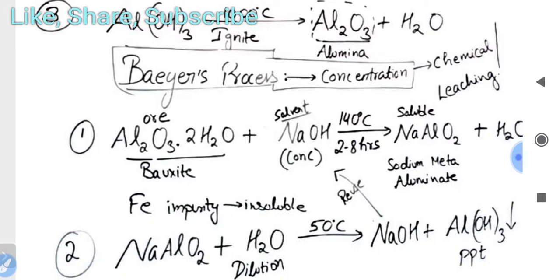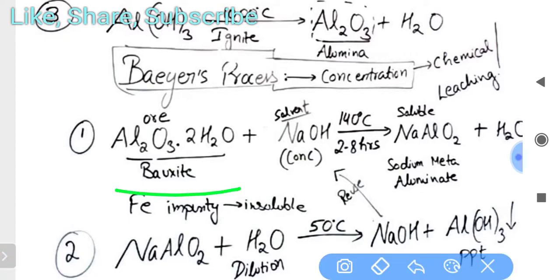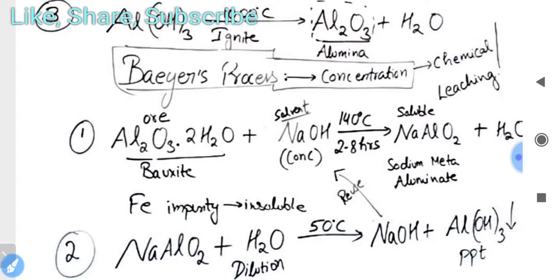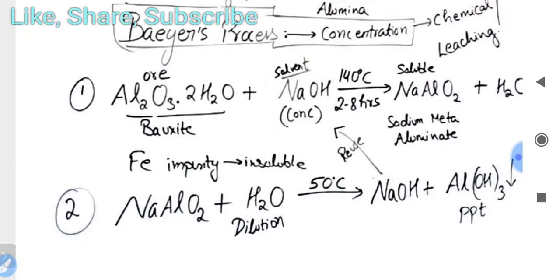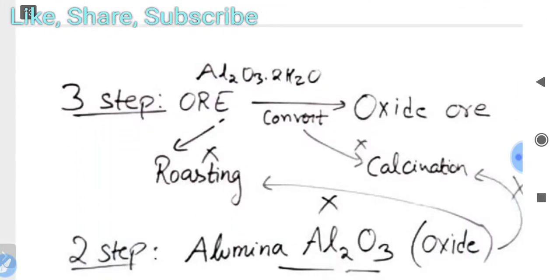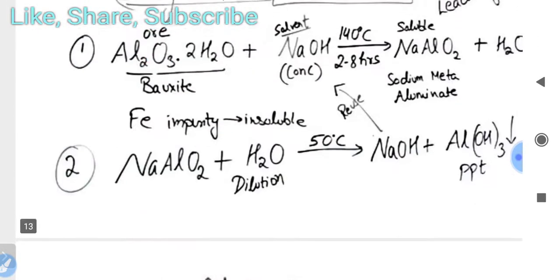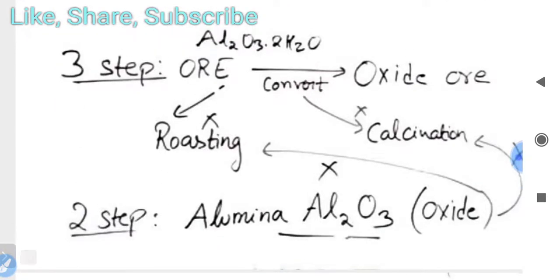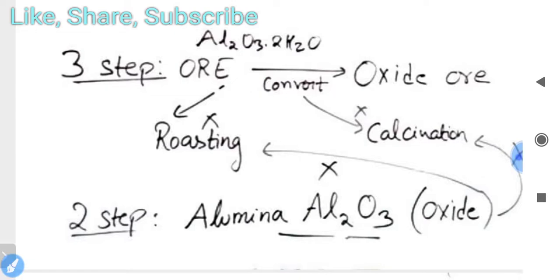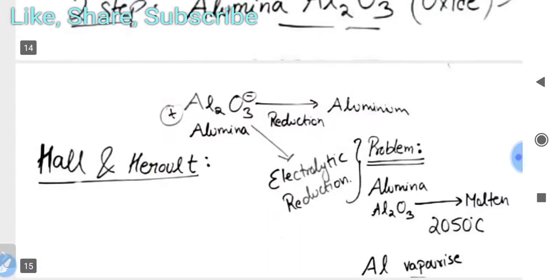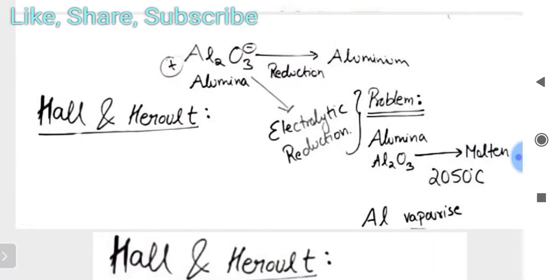In Bayer's process, bauxite reacts with NaOH — a chemical leaching process — at 140°C for 240 to 8 hours. The temperature for dilution is 50°C. We then obtain aluminium hydroxide as a precipitate. When we ignite this precipitate at 1000°C, we get alumina (Al₂O₃). Roasting cannot be used since oxygen is already present; calcination also requires too high a temperature.